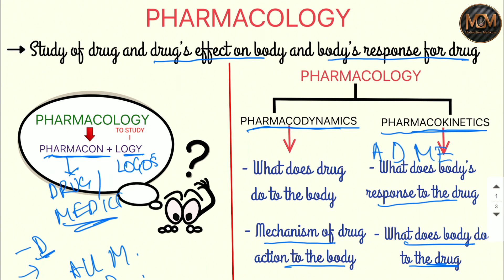ADME stands for: A — Absorption, D — Distribution, M — Metabolism, and E — Elimination. All four of these processes will be studied under pharmacokinetics.